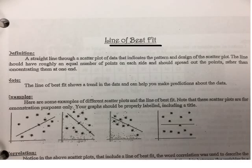So, line of best fit. What is it? A straight line through a scatter plot of data that indicates the pattern and design of the scatter plot. The line should have roughly an equal number of points on each side and should spread out the points, rather than concentrating them at one end.